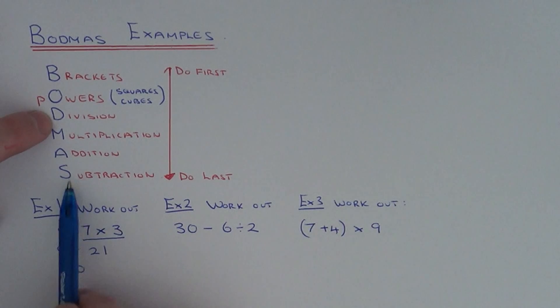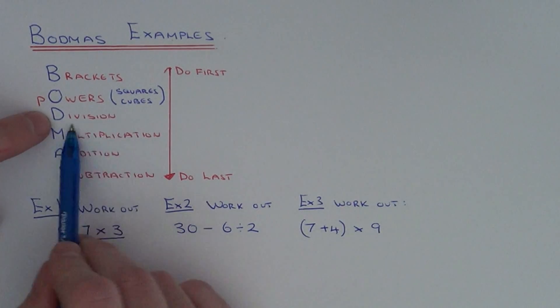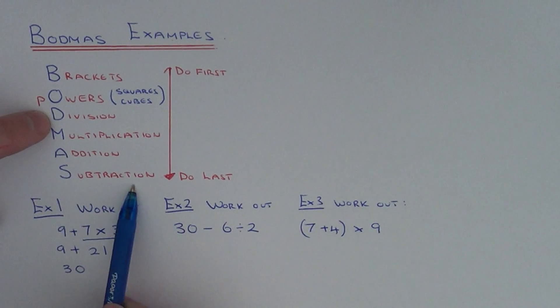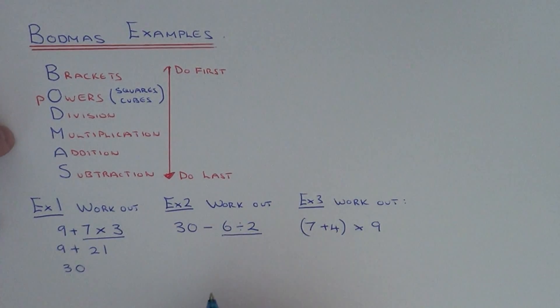Division comes above subtraction. So that means the division part is more important than the subtraction. So we do the division part first of all. So 6 divided by 2 is 3.